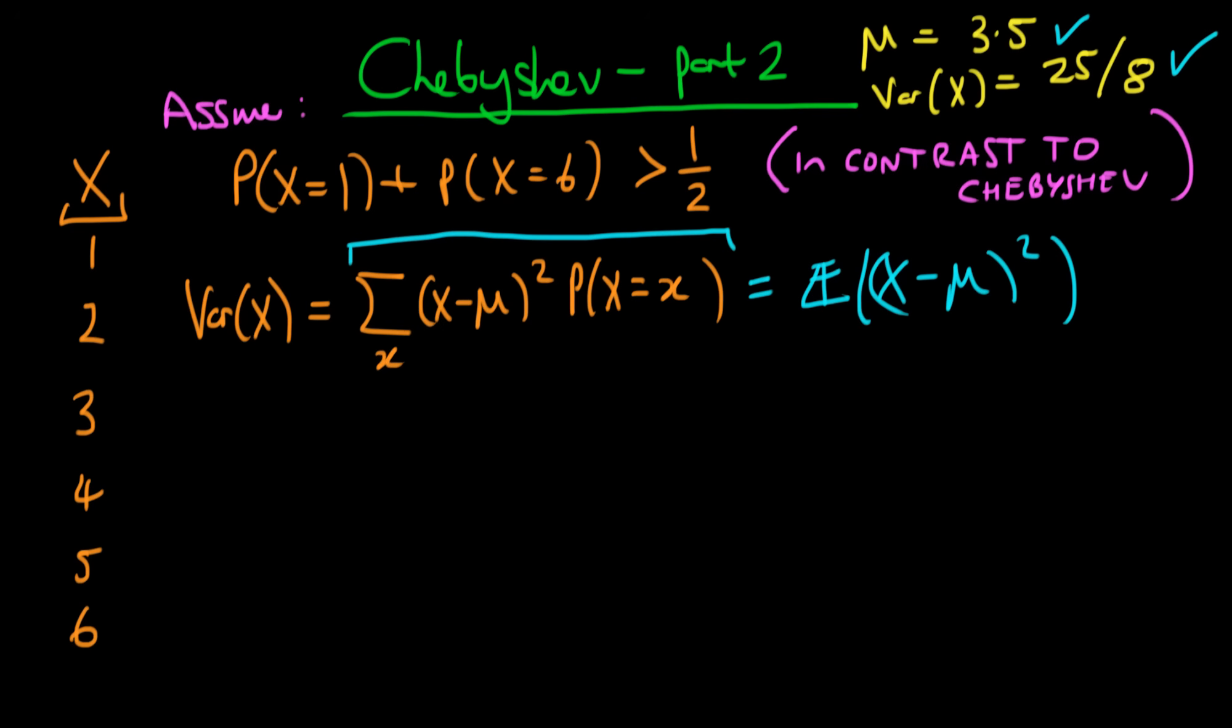Okay, so continuing from this, we can write this out explicitly. There are going to be six terms because there are six different x values which our random variable x can take on. The first term is going to be 1 minus 3.5 all squared times the probability that x equals 1.